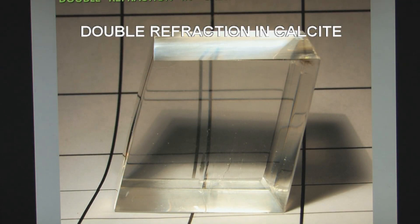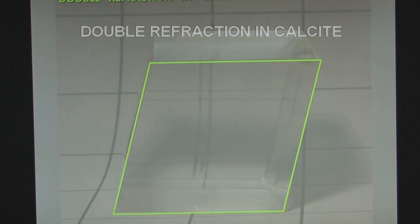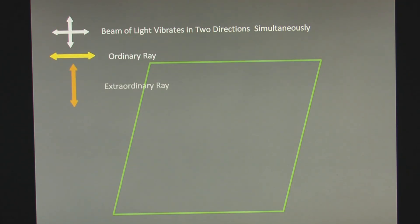This is another piece of clear calcite that shows double refraction very nicely. In order to explain the process of double refraction, we're going to take a look at the calcite at an atomic level. This green rectangle here will represent the cleavage piece. An ordinary beam of light actually vibrates in two directions at the same time — there is a horizontal component called the ordinary ray, and a vertical component called the extraordinary ray. An ordinary source of light like the sun or an incandescent bulb will produce this sort of light vibrating in two directions at the same time.